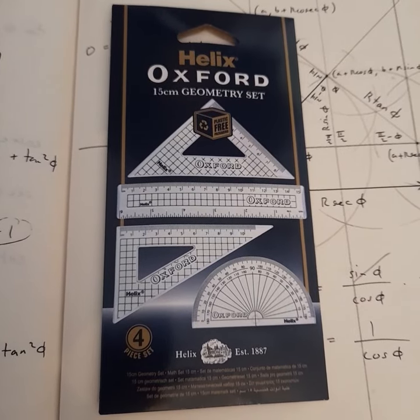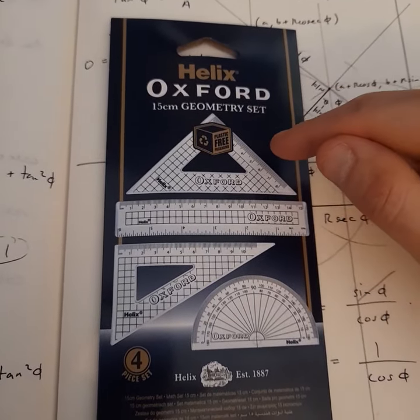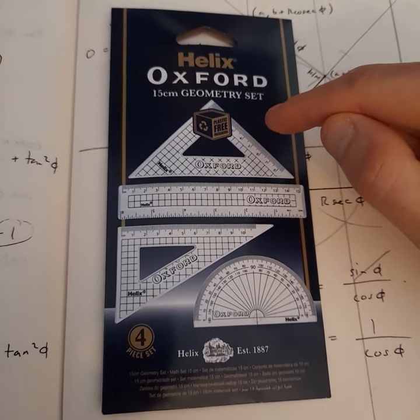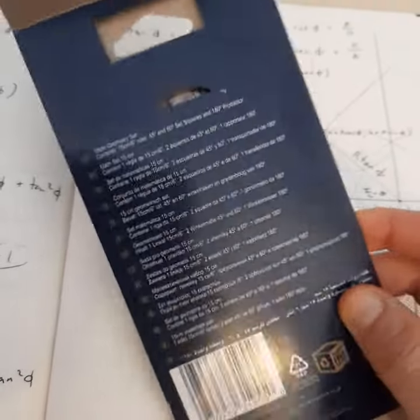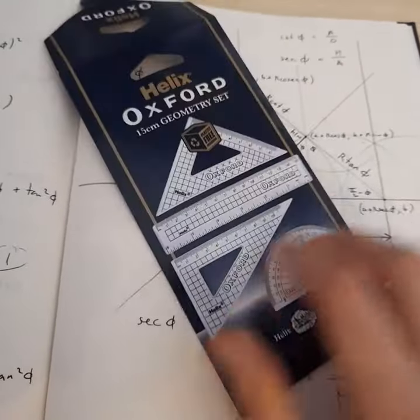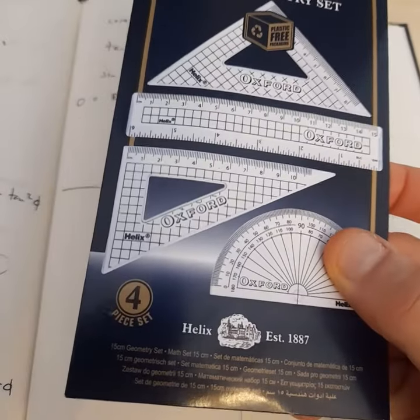Hi, this is just a quick review of the Helix Oxford 15cm geometry set. It cost me around £1.50, the pack is quite easy to open, and it comes with four pieces.